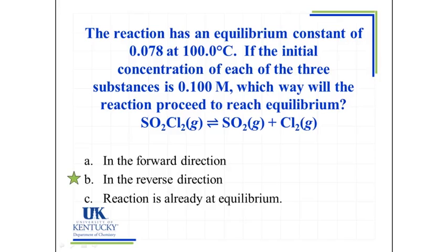Hopefully you saw that the reaction would need to proceed in the reverse direction. We have to look at our reaction, which is a balanced equation that was given to us. We have to look at the value of K that was given, 0.078, and we need to compare that to the value of Q. So what we're going to look at on the next slide is to see how we calculated that value of Q.